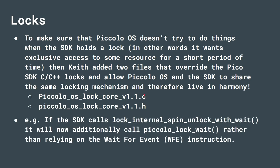Keith also wrote two files — piccolo_os_lock_core.c and .h — which override the Pico SDK lock. So if the Pico SDK is doing something it gets locked, and that lock is shared with all the tasks running on Piccolo OS. For example, the SDK call lock_internal_spin_unlock_with_wait will now additionally call piccolo_lock_wait rather than relying on the wait-for-event instruction. It uses our own locking mechanism, forcing a context change to ensure everything cycles around and the lock gets released. With these files, we're now in sync with the SDK.